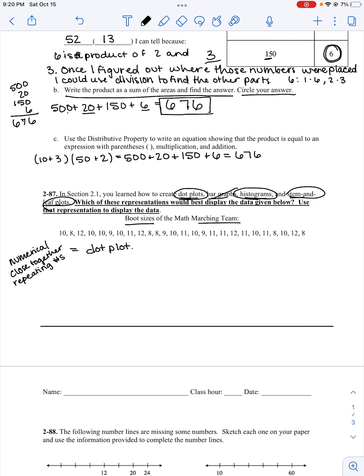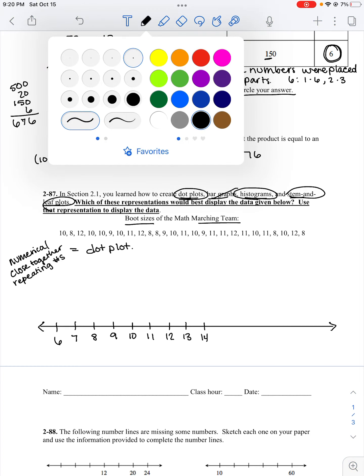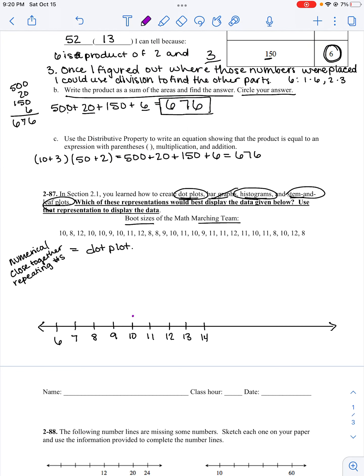So my dot plot, if you remember, we use a number line. I have to use my smallest number and go all the way to my largest number. It looks like my smallest is 8 and my largest is 12. So I drew my number line a little bit too big, but I'm going to go to 14 and go down to 6. For each one that I have, I'm going to put a dot above that number.